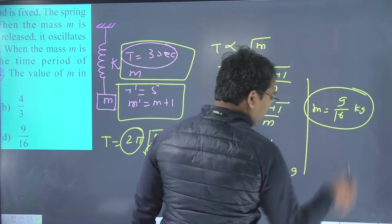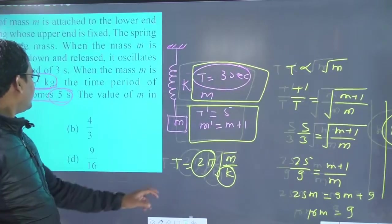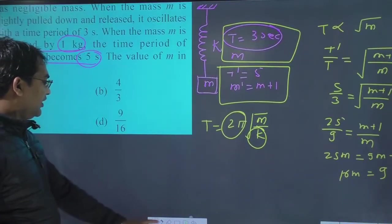That is the actual mass. The mass in the beginning was so much, my dear children. 9 upon 6. That is D option.